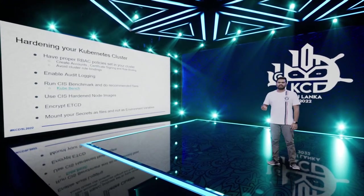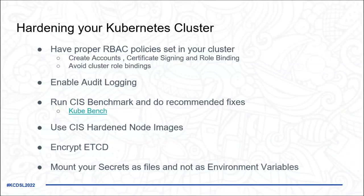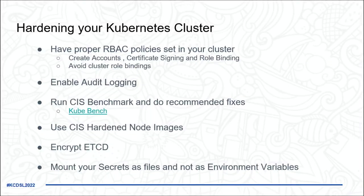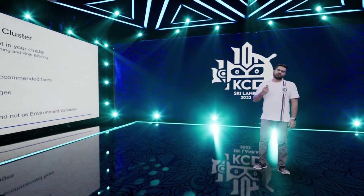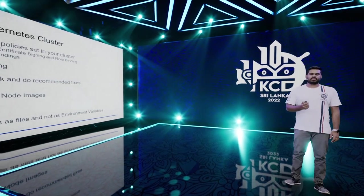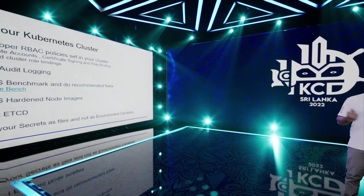Encrypt etcd — no matter what other security tools you run, if etcd is not encrypted in your control plane, any attacker with control plane access can easily read the key-value store and get your secrets. For secrets themselves, don't inject them as environment variables — that can leak credentials to anyone with VM access. Instead, mount them as files and read from that file.